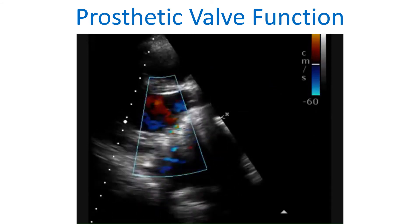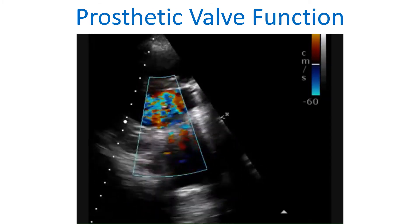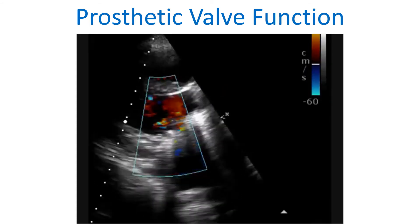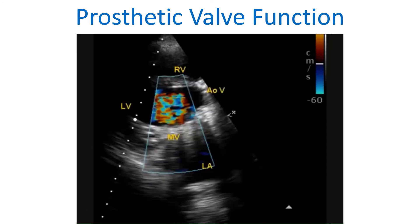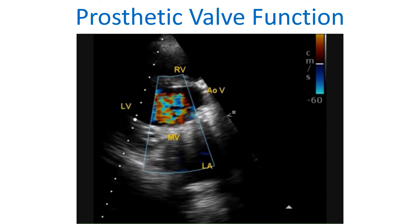Color Doppler imaging from the parasternal long axis view shows turbulent mitral inflow through the prosthetic mitral valve. Unlike in a normal mitral valve, some turbulence is common in a normally functioning prosthetic valve. A gradient up to 5 mmHg may be normal across a prosthetic metal valve. The color bar at the top corner shows a Nyquist limit of the color flow mapping as 60 cm per second; hence, any flow with velocity above that will show aliasing.